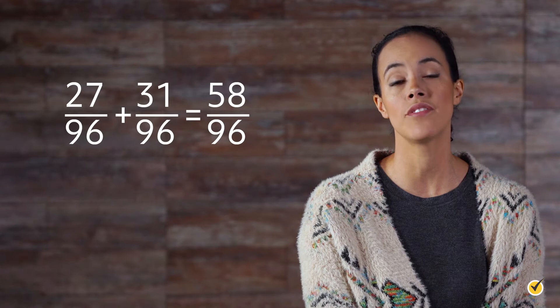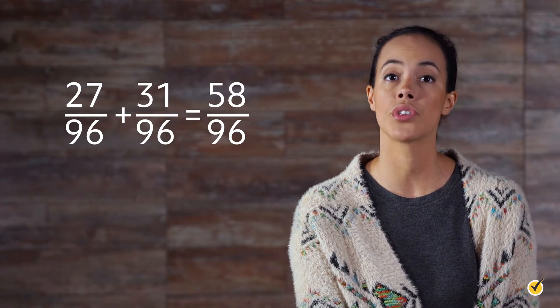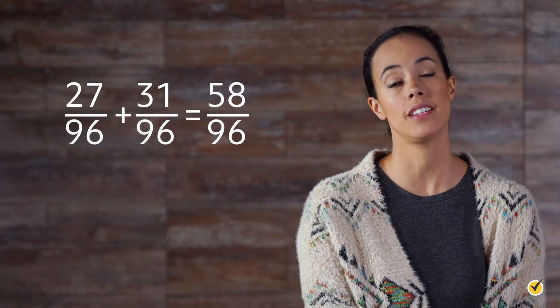If you rolled the number cube a ninety-seventh time, you might predict an outcome of a four or a five, because the combined empirical probabilities of these two outcomes are twenty-seven out of ninety-six plus thirty-one out of ninety-six, which equals fifty-eight out of ninety-six. This illustrates the key distinction between theoretical probability and empirical probability.